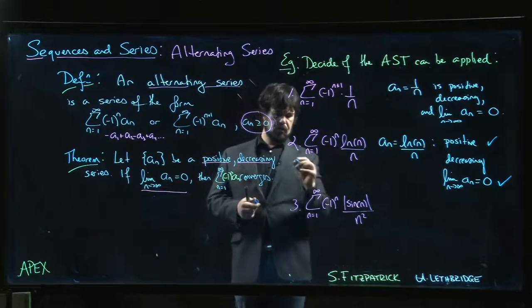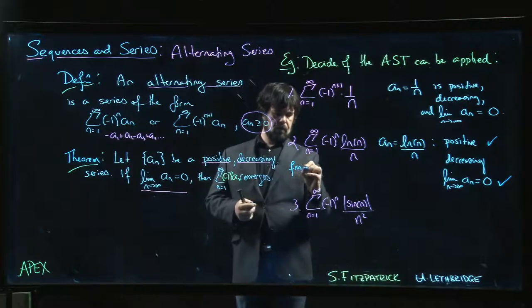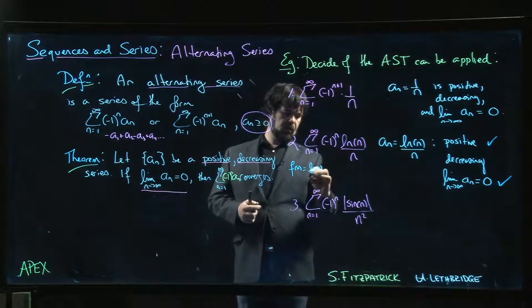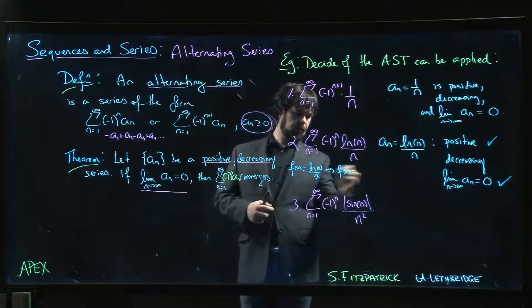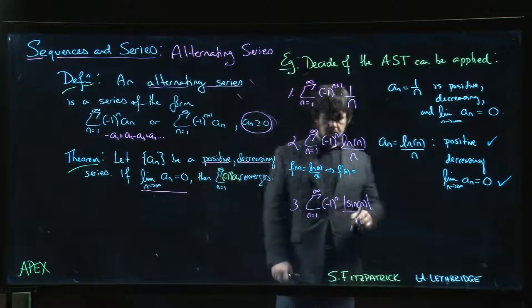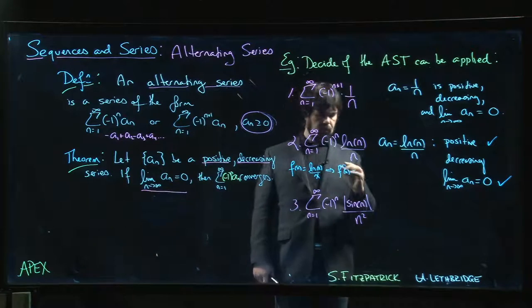But let's take a look. If you look at the function f(x), f(x) is log x over x, then f prime of x, if we do the quotient rule, we get the derivative of the top, 1 over x times the bottom x.